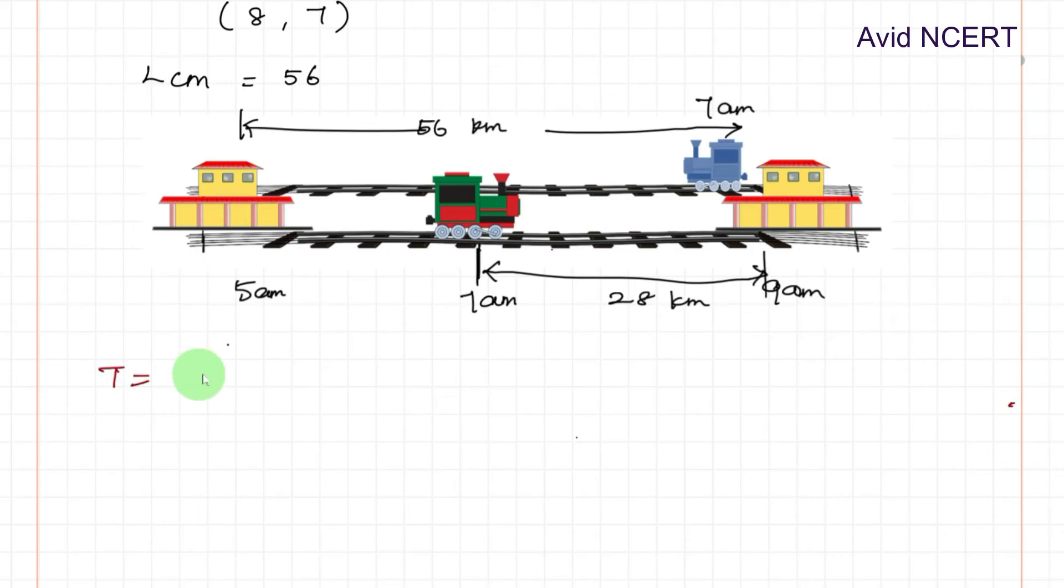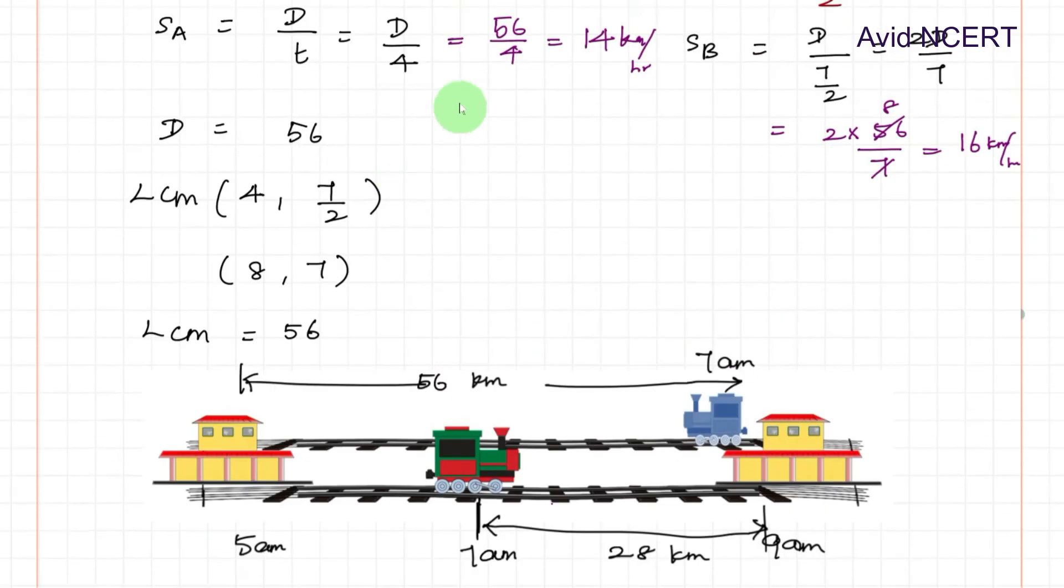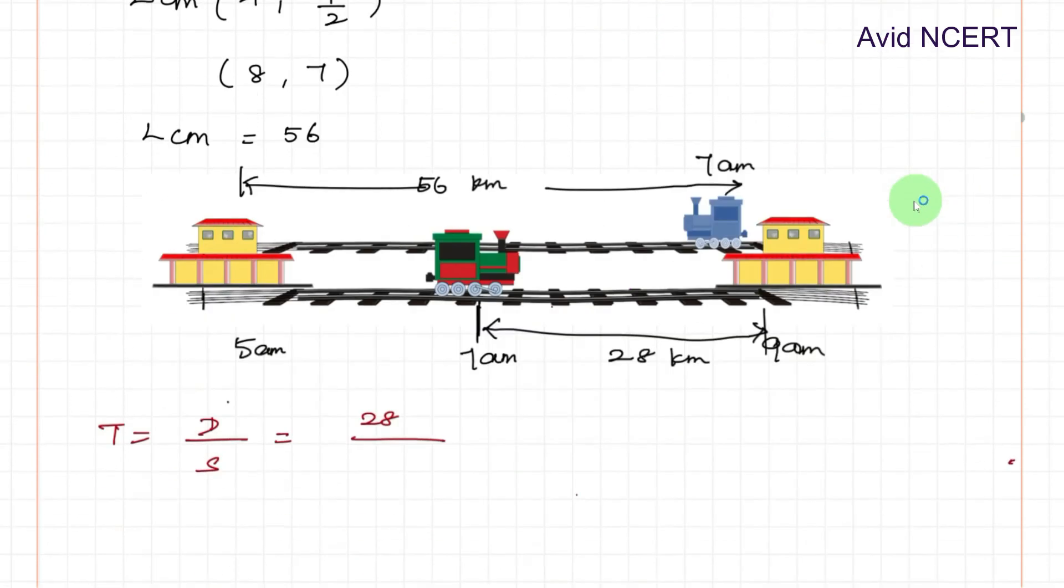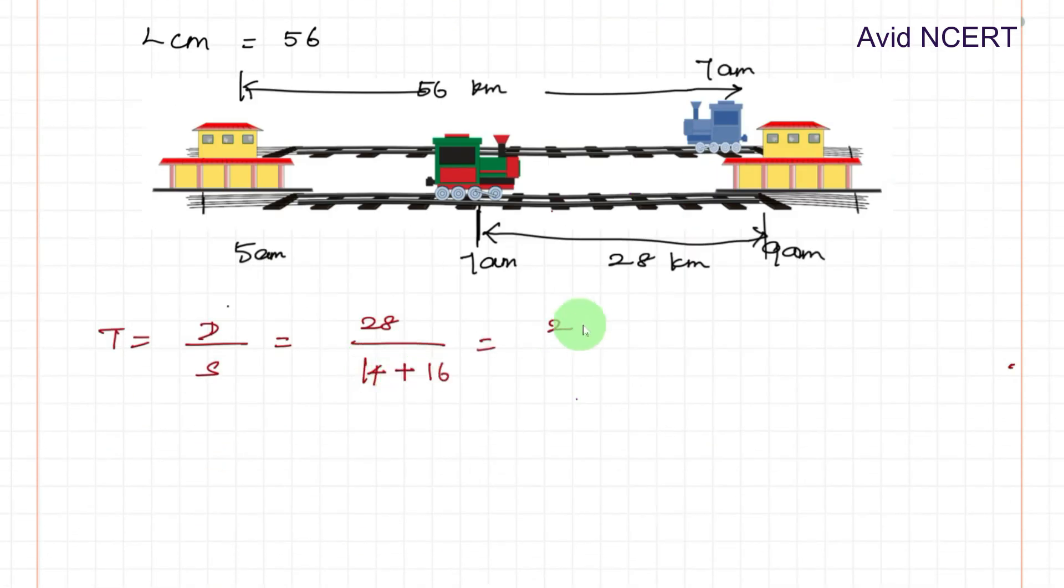Time taken could be found by distance by speed, so relative speed. Distance is 28 kilometers and relative speed is speed of train A plus train B because they are traveling towards each other. Speed of train A is 14 and speed of train B is 16, so 14 plus 16 equals 30 kilometers per hour. So 28 by 30 hour. To convert this hour into minutes, we are multiplying by 60, which is 56 minutes.